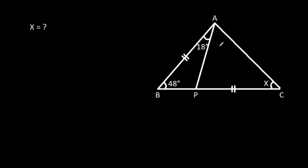In this video, we have been given that AB is equal to CP, angle ABC is 48 degrees, angle BAP is 18 degrees, and angle ACB is X. We have to find X.